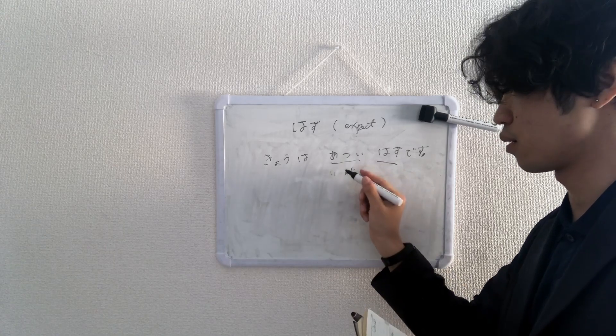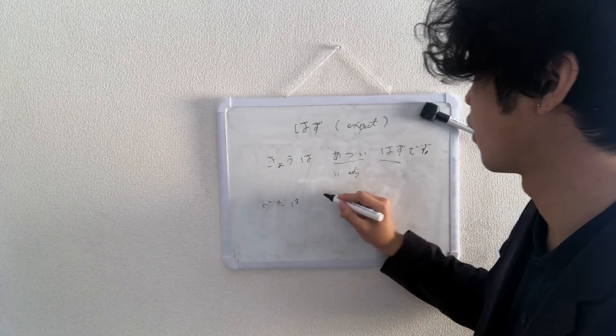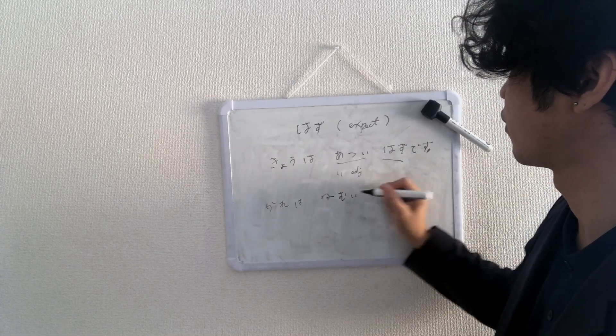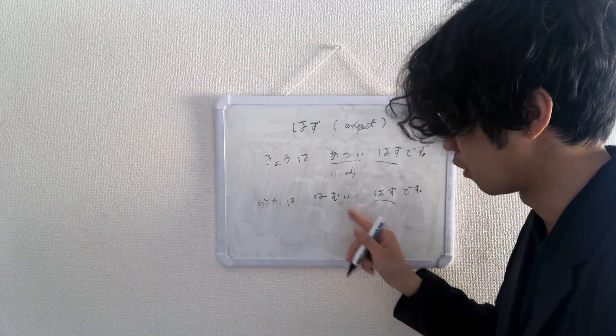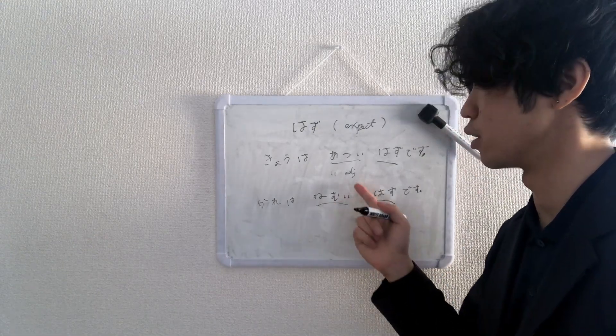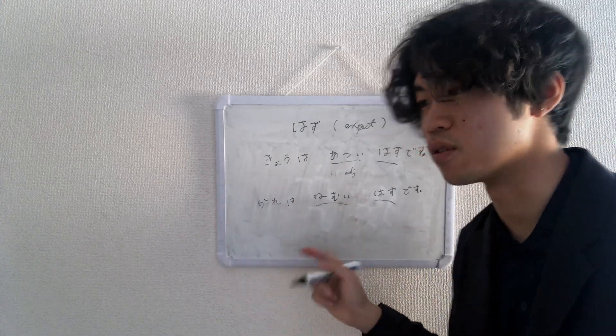Today, it's supposed to be hot. For example, 彼は眠いはずです. He should be sleepy, he's supposed to be sleepy, I expect him to be sleepy. Maybe he pulled an all-nighter, simple right, the い-adjective.